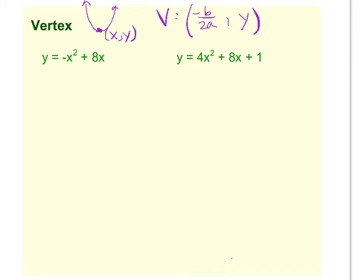So in this first example, our a value is in front of the x squared, so negative 1, and our b value is with the x, which is 8.